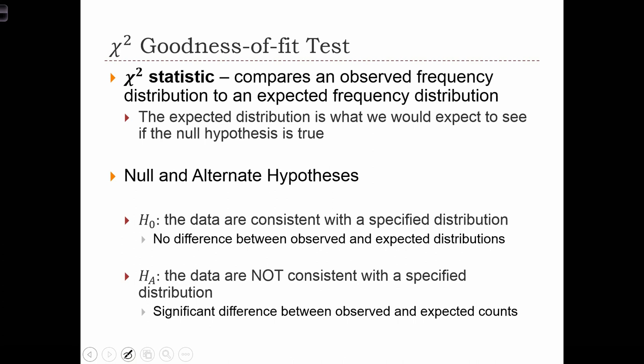The null hypothesis for a chi-squared goodness of fit test is that the data that we've collected, the sample that we've collected, are consistent with a specified distribution. In other words, there should be no difference between the observed distribution and the expected distribution. The alternative hypothesis is that the data are not consistent with a specified distribution. So there is some significant difference between an observed distribution and expected counts of that distribution.